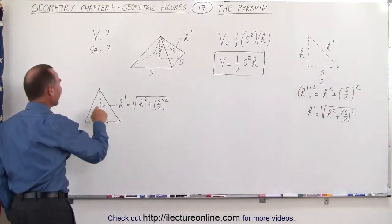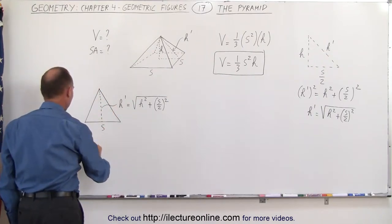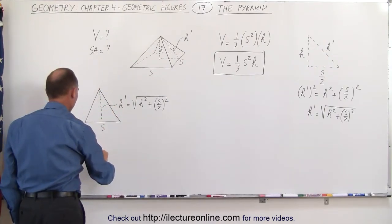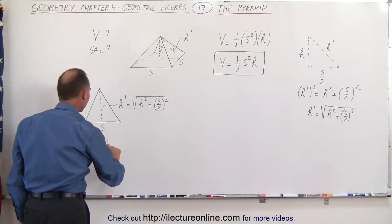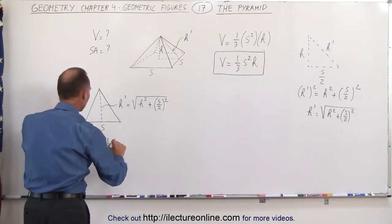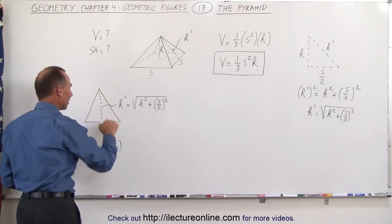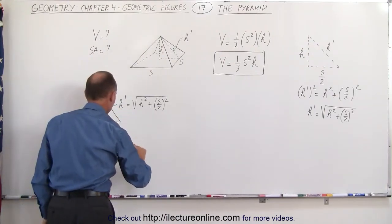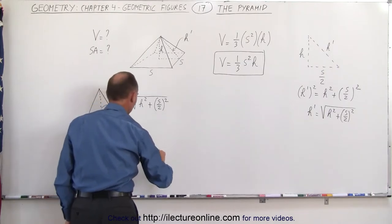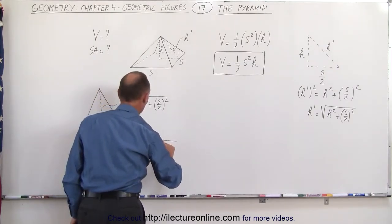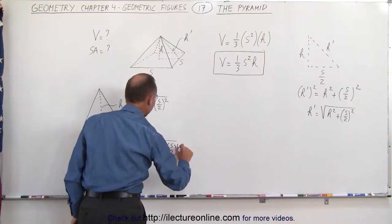Then to find the area of a single triangle, we can say that the area of the triangle is equal to one-half the base, which is s, times the height — which is the slanted height, which is h prime — or one-half s times the square root of h squared plus the quantity s over 2 squared.